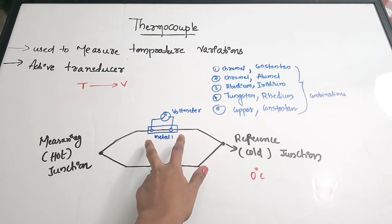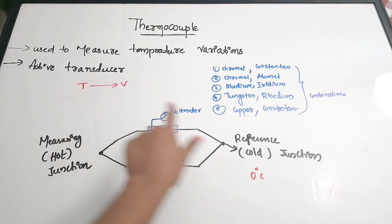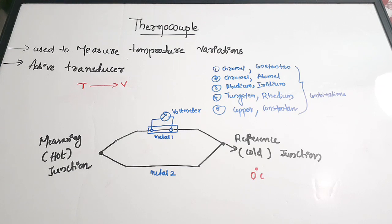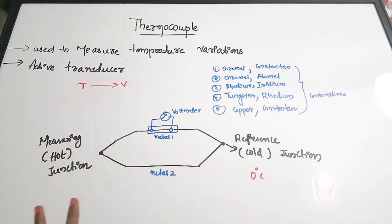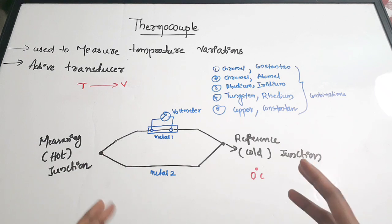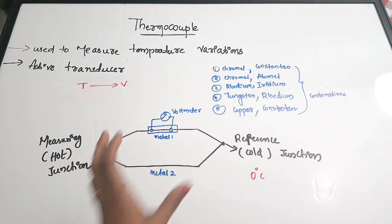You can see that there is a voltmeter connected to this circuit — it forms a closed circuit. The voltmeter is used for measuring voltage or potential difference. So it is clear that there will be some potential generated in this circuit, and that voltage is measured with the help of the voltmeter.